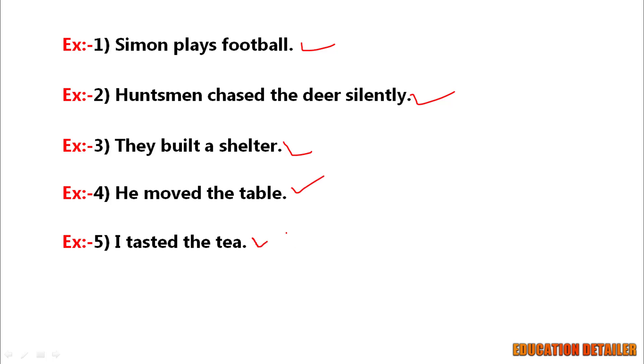Now you can easily say the verbs play, chase, built, move, and test are transitive verbs. And each verb has an object: football, the deer, a shelter, the table, and the tea.